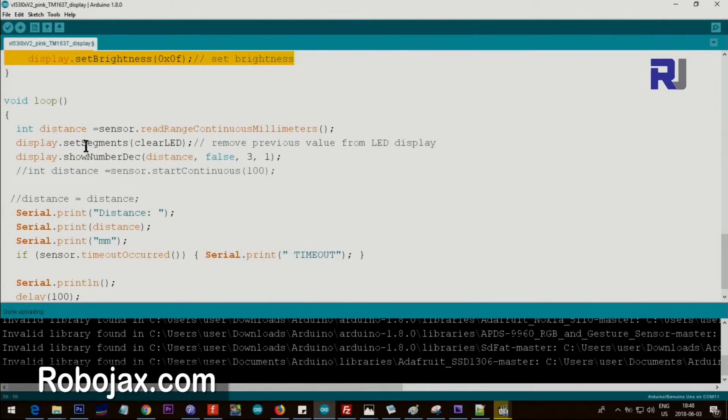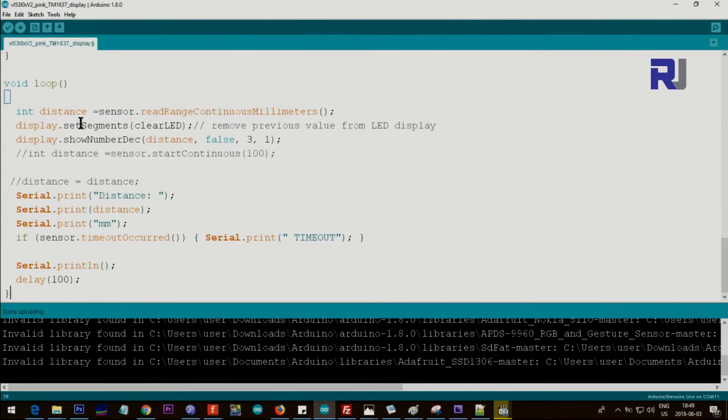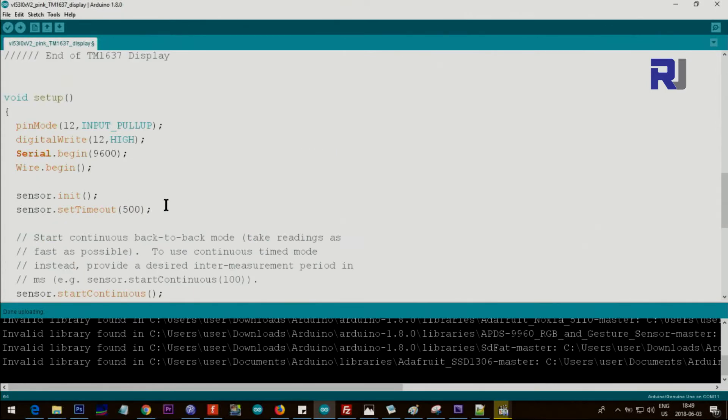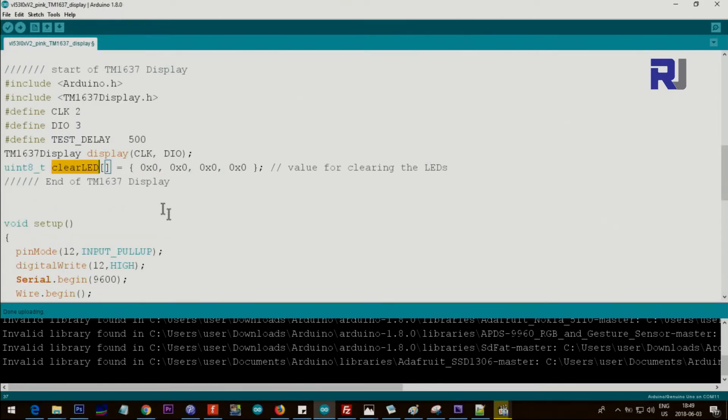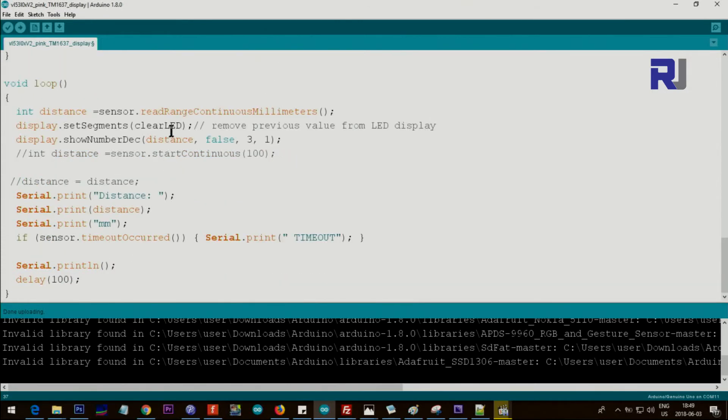The important portion where I've combined these two together is in this section. We're measuring the distance by reading it in millimeters and storing it in the distance variable. After that, we're clearing the seven-segment display. Every time the loop goes, we're clearing the LEDs, and then we set the distance value to display it on the screen.